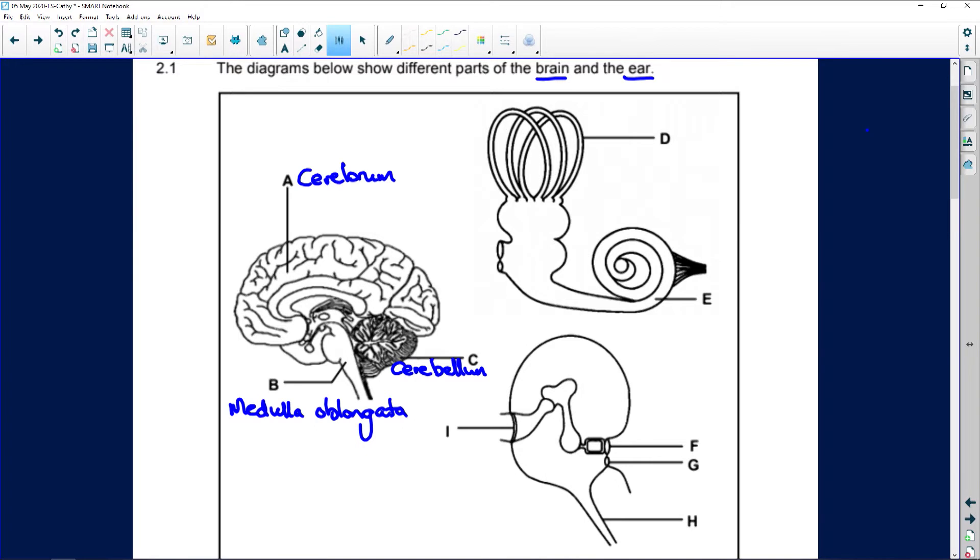Then C is the cerebellum. D, well, they're round structures. It's not actually drawn correctly here, but anyway, we'll forgive them for the diagram. Those are your semicircular canals. And why aren't they drawn correctly? Because they are always at right angles to each other.